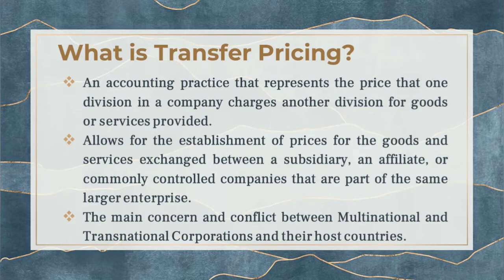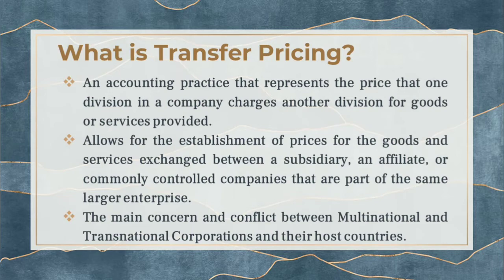For example, the microchips used in computers and cellphones sometimes come from the Philippines. If the Philippines charges 100 pesos per microchip, but Thailand offers to produce and sell the same at 80 pesos — or about 55–75 baht — then the Philippines is affected because its price is higher. That is where the tension arises.